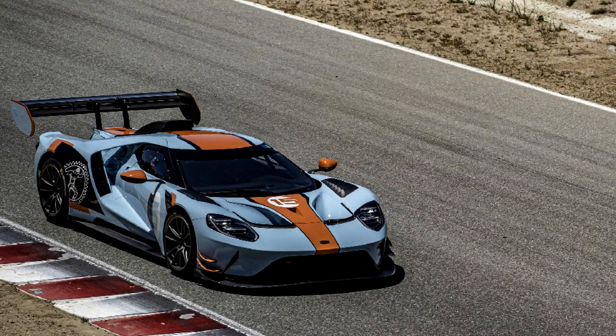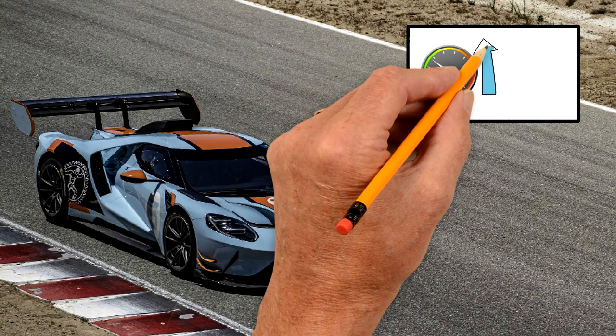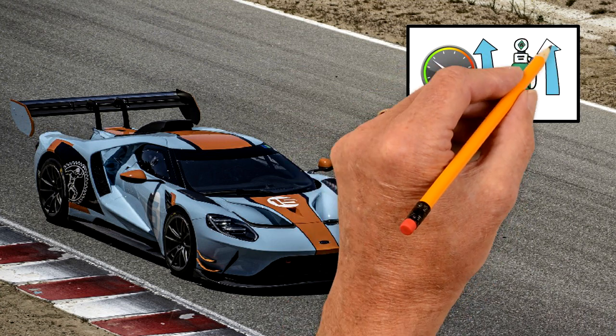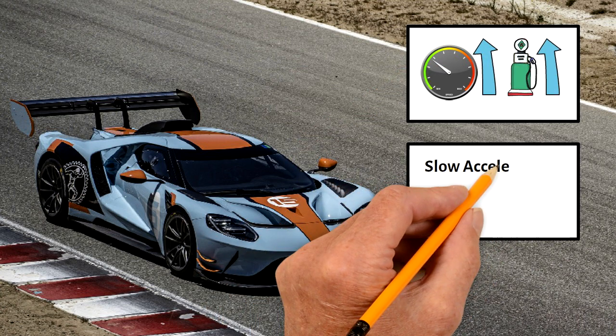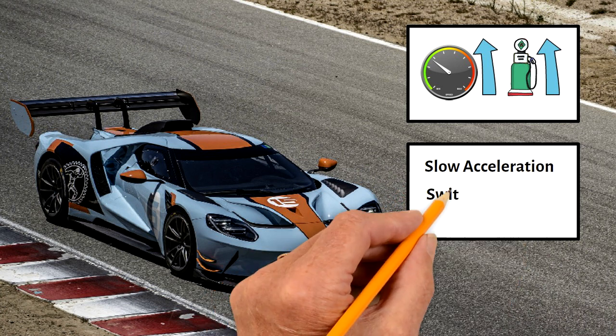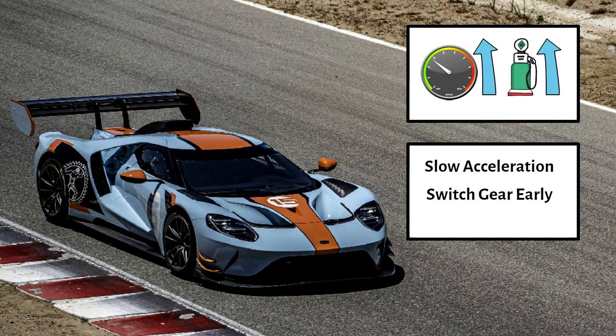The faster the acceleration, the higher the fuel consumption. The lowest fuel consumption can be achieved by accelerating slowly and switching early in a higher gear. If the car is automatic, check if it has the eco function, which basically does this early switch in higher gear for you.